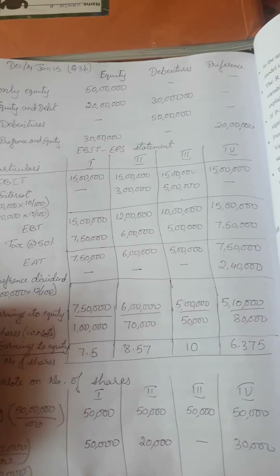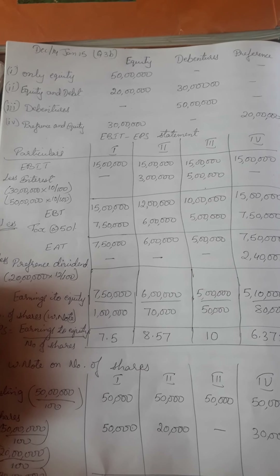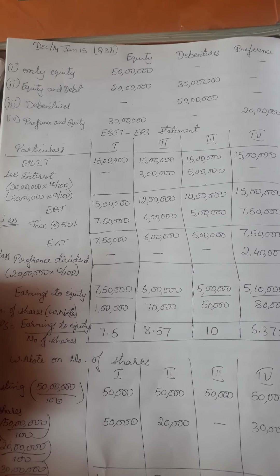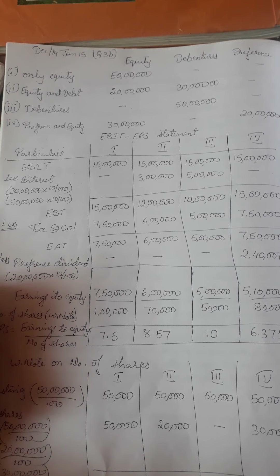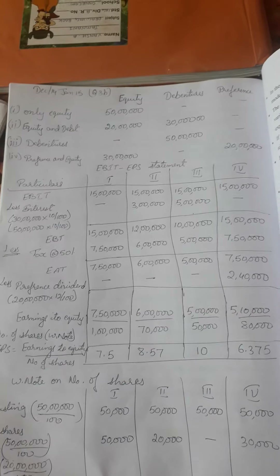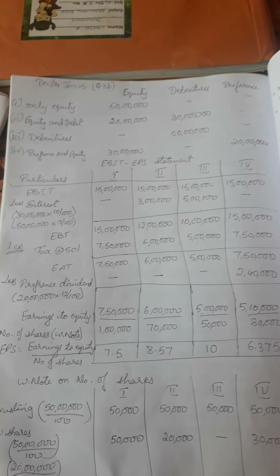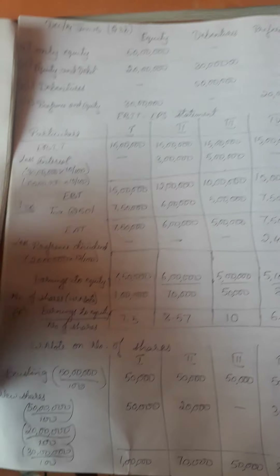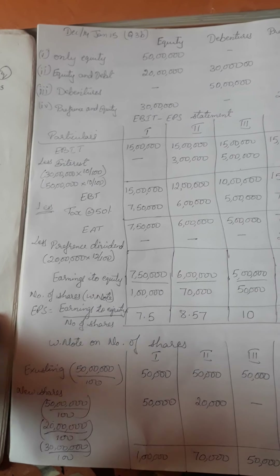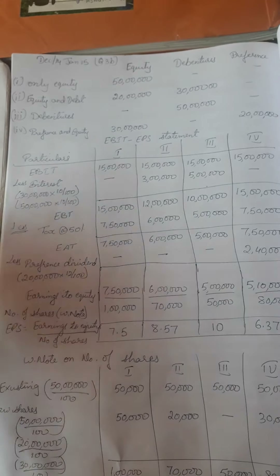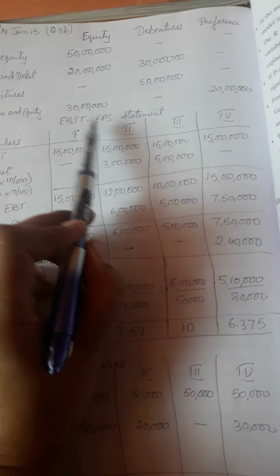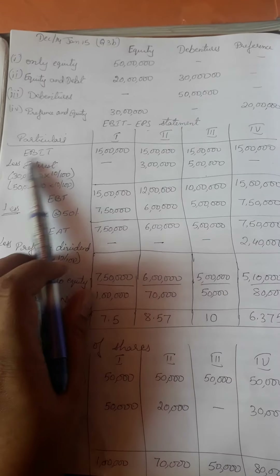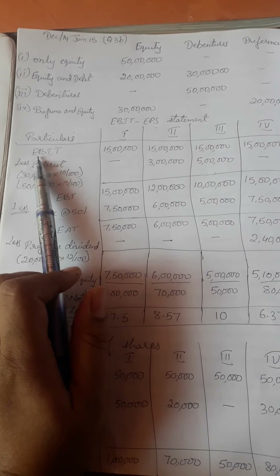The main objective of a firm is wealth maximization of shareholders. Shareholders' wealth increases when earnings per share increases. So in this problem we will find EPS for each of the four options, and whichever option gives the highest EPS will be the best option. We call this EBIT-EPS analysis or the EBIT-EPS statement. We prepare an income statement for all four options.